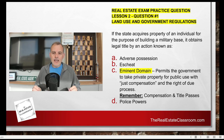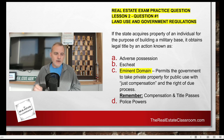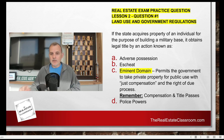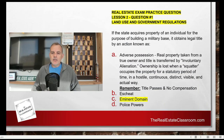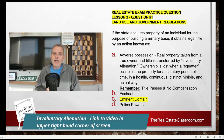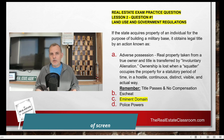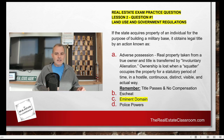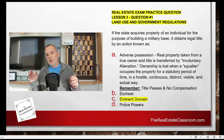I want to look at A, B, and D — the incorrect answers — because they are also very important real estate terms that will probably end up on your real estate exam. Adverse possession is when real property is taken from a true owner and title is transferred by involuntary alienation. Ownership is lost when a squatter occupies the property for a statutory period of time in a hostile, continuous, distinct, visible, and actual way.